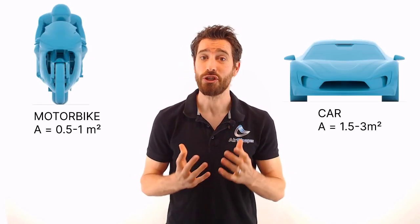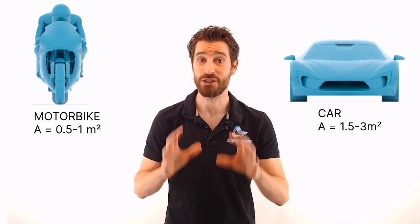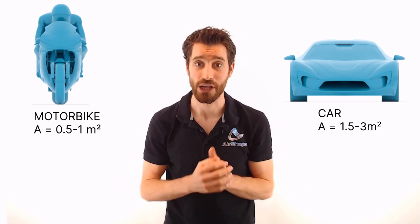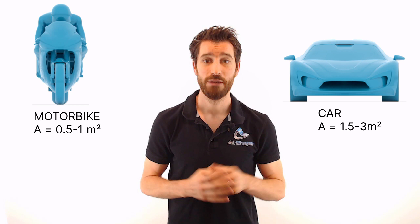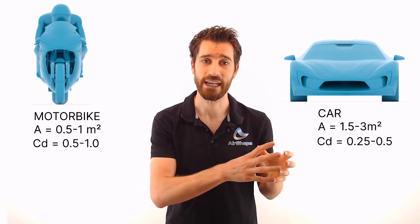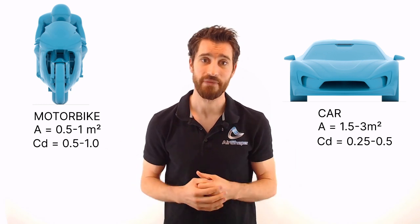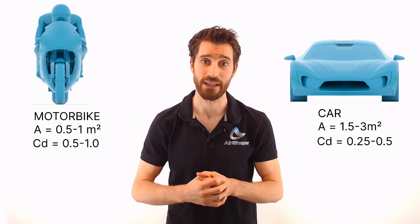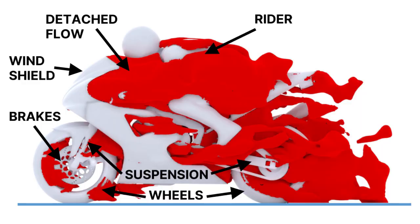First of all, aerodynamic drag. The frontal area of a motorbike, which is the surface area when looking at the front of an object, is much smaller for a motorbike. But to obtain the total drag on a motorbike, you need to multiply this frontal area with the drag coefficient, and this one is much higher for a motorbike. Because, for example, it's full of small exposed bits and pieces, like the front calipers, the brakes, the wheels, the suspension and so on.